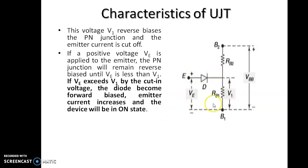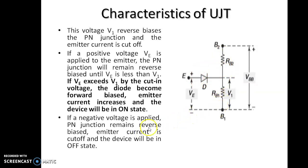Now when will the UJT turn on? It will turn on if a positive voltage VE is applied to the emitter. The applied voltage should exceed V1 by the cutting voltage of the diode. Then only it will become forward biased and the emitter current increases and the device will be in on state. If a negative voltage is applied, then the PN junction will remain reverse biased and the emitter current is cut off.